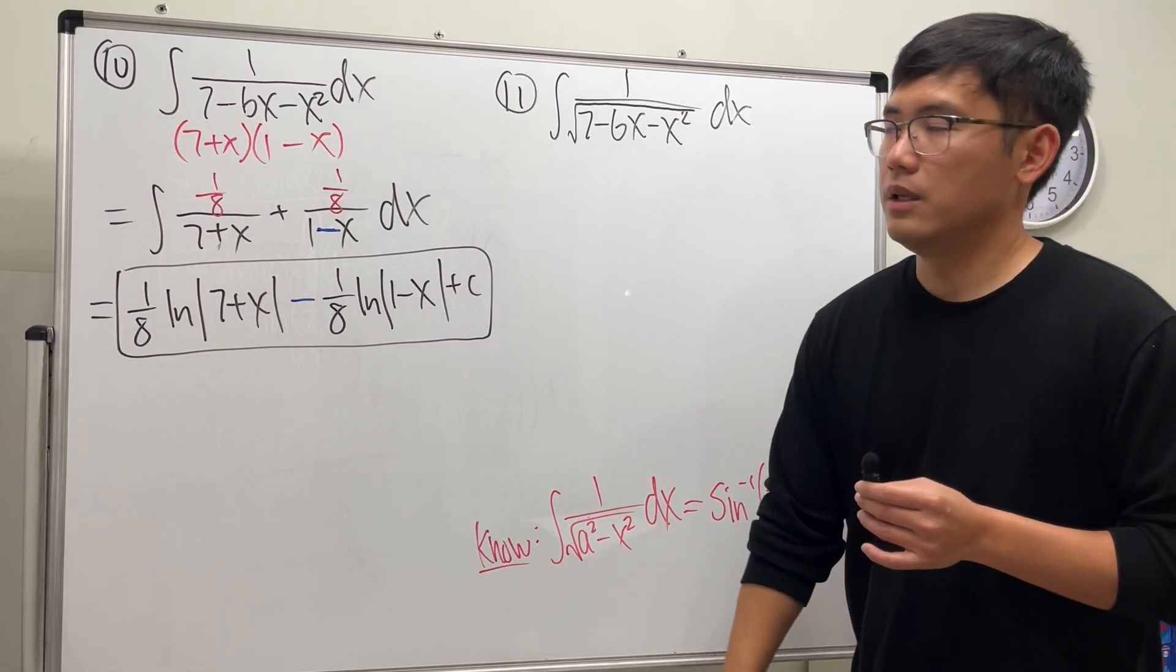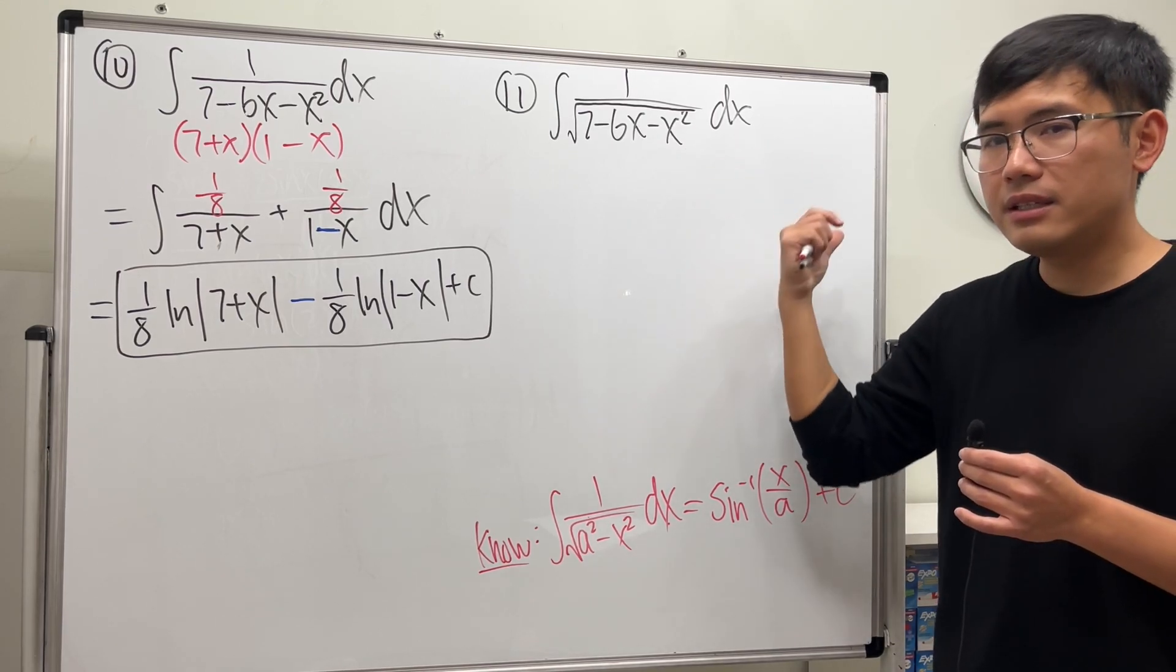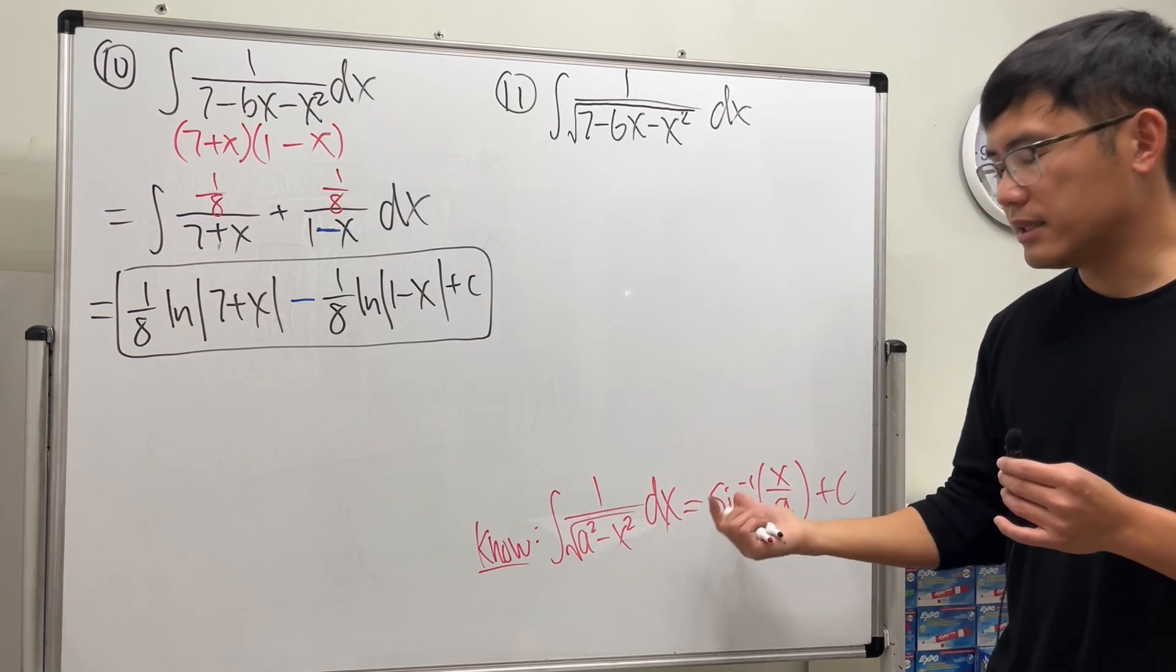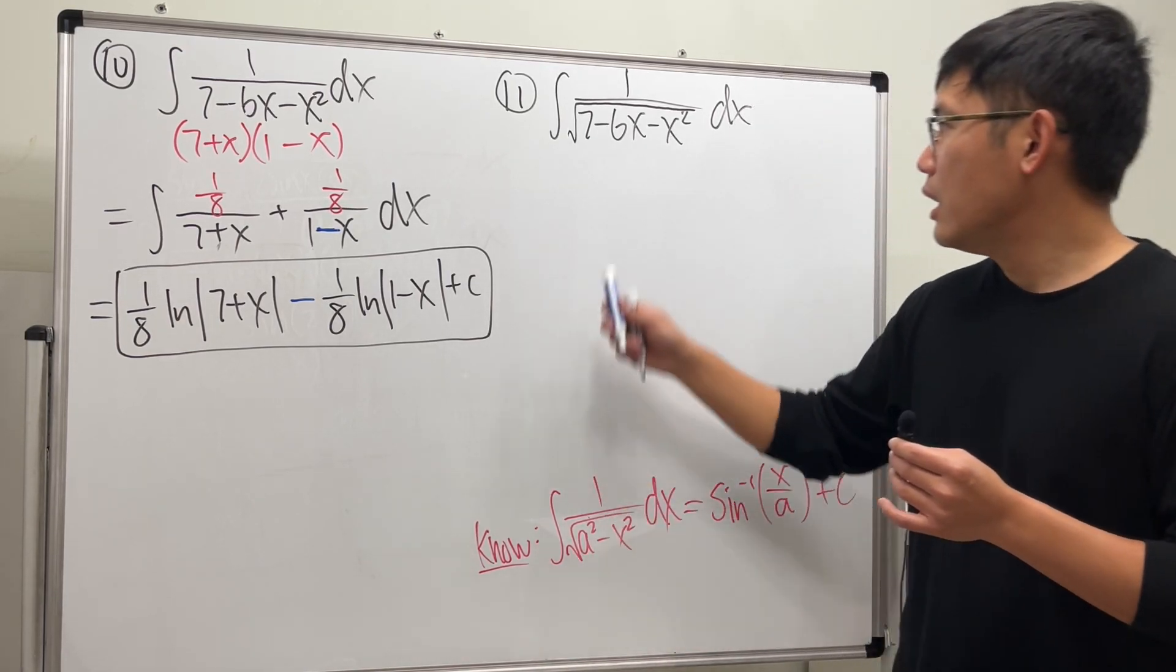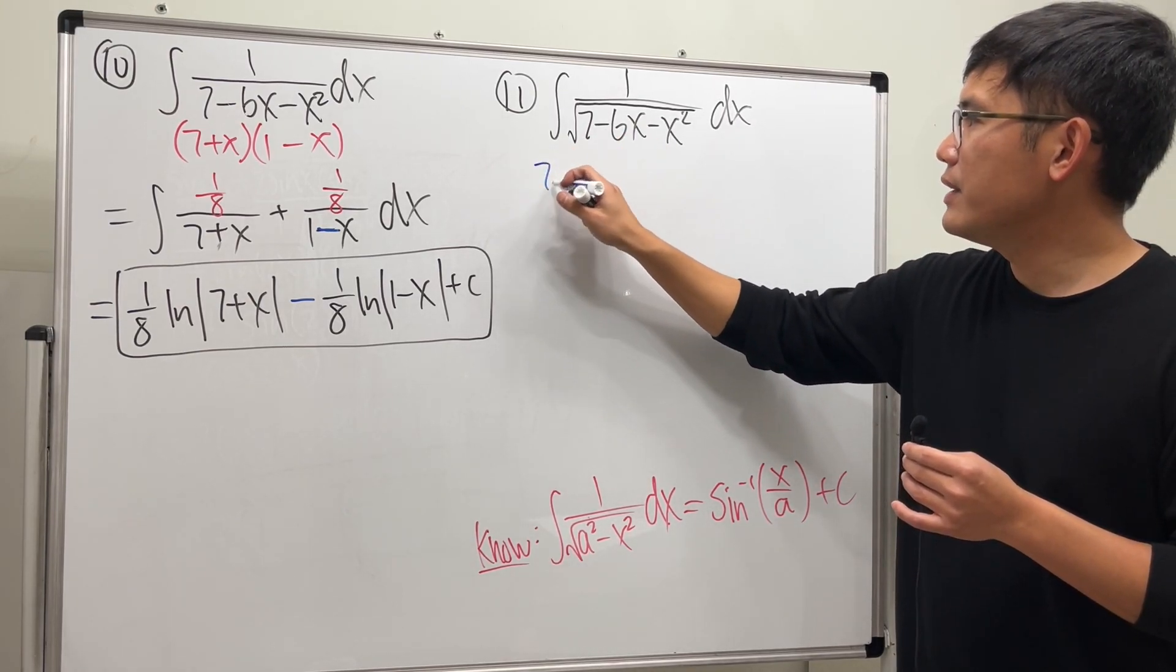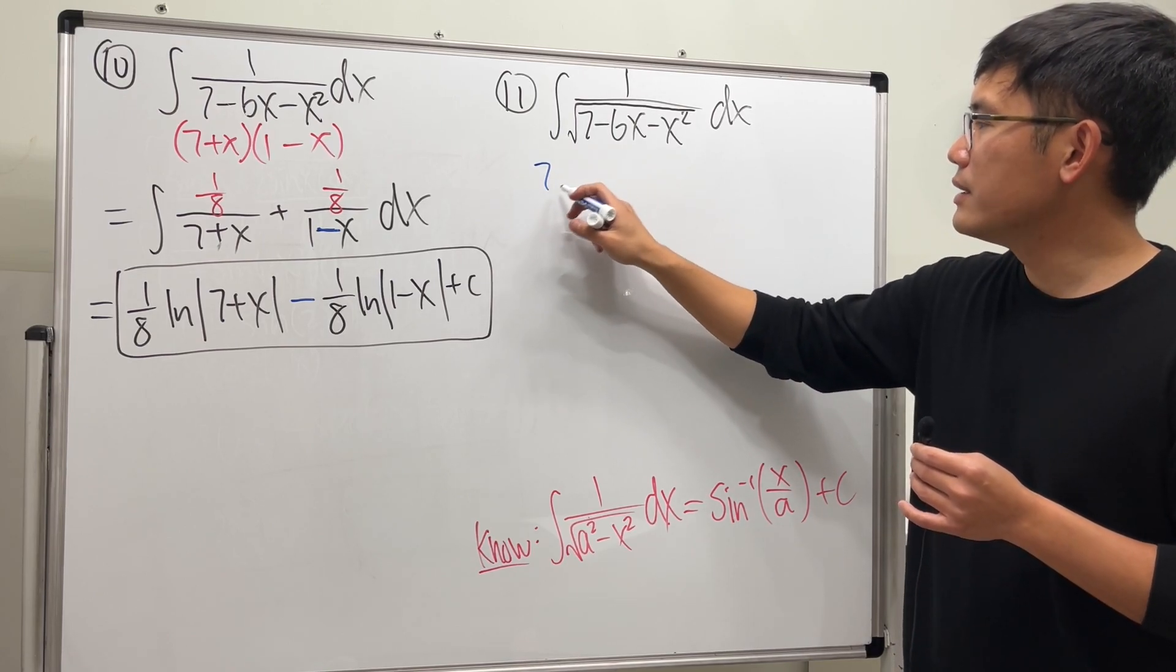Why this? Notice that we have a quadratic on the bottom, and in fact, later on after we complete the square, we'll be able to utilize this formula. So the key is we complete the square first. Look at the bottom here, the inside. We have 7, and then I'm going to factor out a negative here.